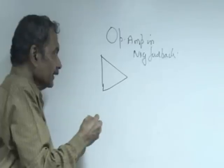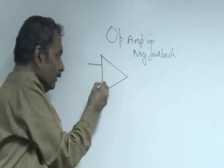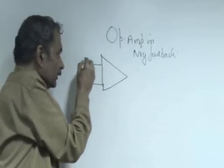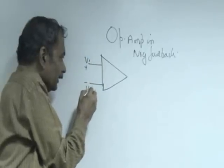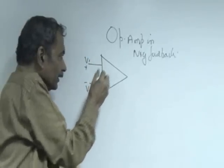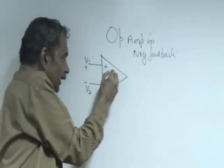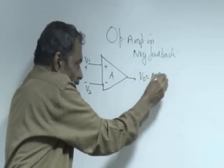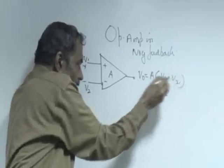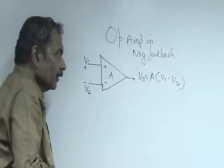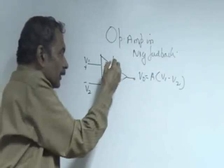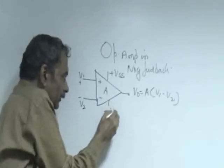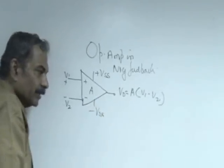Let us consider first the op amp itself. It is nothing but the differential input stage with V1 at one end and V2 at the other end of the input such that output is A times V1 minus V2. A is called the differential mode gain and it is biased by dual supplies plus VSS minus VSS.